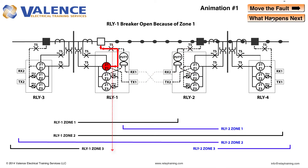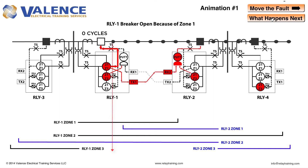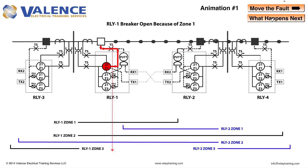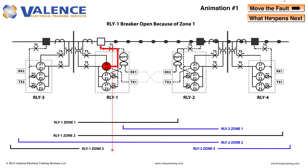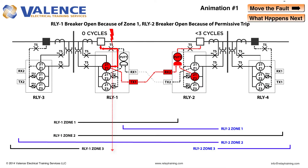How long will it take before Relay 2 trips? Relay 2 would normally trip after a 20 to 40 cycle Zone 2 time delay in a normal impedance protection scheme, but we're using a PUTT scheme here. Relay 2 receives a permissive underreaching transfer trip signal from Relay 1. If Relay 2 receives permission to trip from Relay 1 and it detects a fault on the line via the Zone 2 pickup, it is allowed to trip faster after a small communication time delay. So Relay 2 is going to trip in a significantly shorter amount of time using a PUTT scheme compared to your traditional distance schemes.